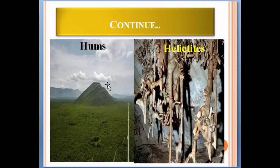Hums are the original remnants of limestone, occurring as residual hills. This is analogous to a monadnock in the fluvial cycle — it looks like a monadnock, which is a fluvial landform. These are also described as pepino hills.